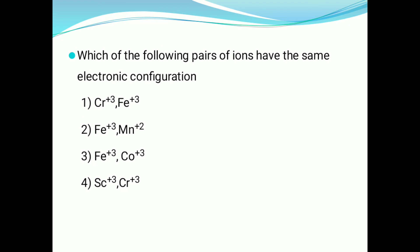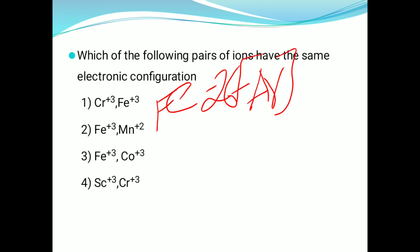Which of the following pairs of ions have the same electronic configuration? Here we have four pairs. Among the four pairs, we need to find the pair with the same electronic configuration. For example, iron — atomic number 26 — has electronic configuration [Ar] 3d⁶ 4s².